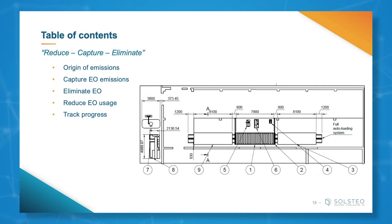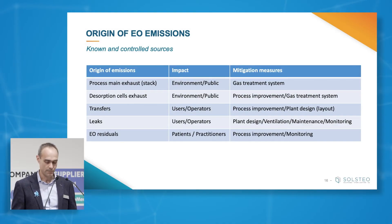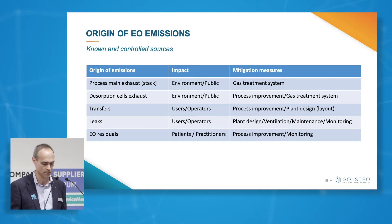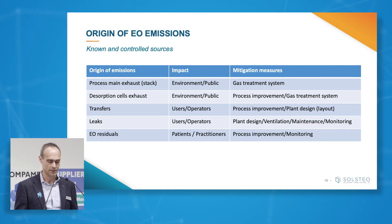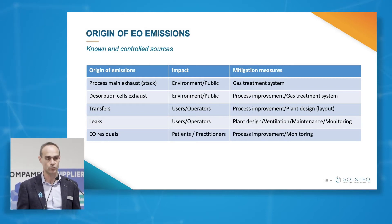This slide shows a generic layout of an ethylene oxide sterilization plant — a very standard one with preconditioning, stabilization, and aeration, plus a gas treatment system which is here a catalytic burner. In this plant we have primary sources of EO emissions: the process main exhaust, the stack of the plant, which has an impact on the environment and the public around the plant. The way to mitigate this type of emission is of course by having a gas treatment system.